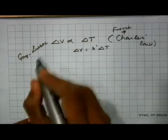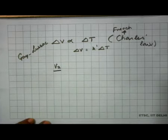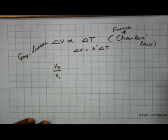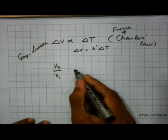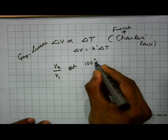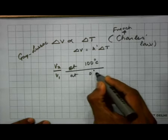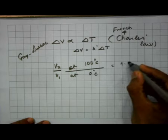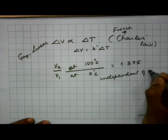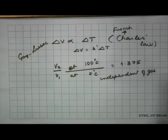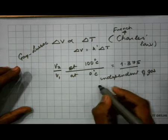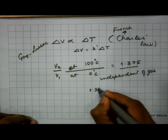Gay-Lussac did a similar experiment except he measured the ratio of the volumes of a fixed amount of gas at two different temperatures. He measures V₂ over V₁, the ratio at 100°C (boiling water) over that at 0°C, and found this ratio was 1.375, and this is independent of the gas. The modern accepted value is about 1.366.